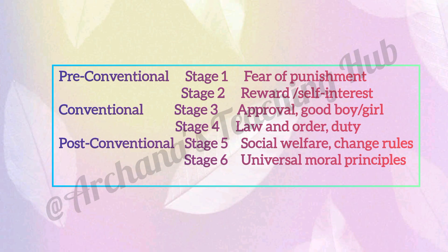Quick revision — level, stage, and key idea. Level 1 Pre-conventional: Stage 1 — fear of punishment; Stage 2 — reward and self-interest. Level 2 Conventional: Stage 3 — approval, good boy/good girl; Stage 4 — law and order, duty. Level 3 Post-conventional: Stage 5 — social welfare, change in rules; Stage 6 — universal moral principles.